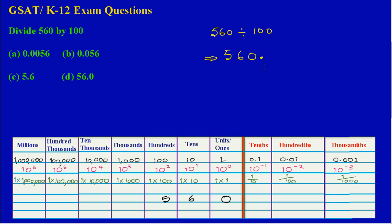When dividing by powers of 10 we move the point to the left — the point isn't really moving, but that's the general concept. Count how many zeros are in the number you're dividing by. In 100 there are two zeros, so I'm going to hop two times to the left: one, two. The point has now moved two places to the left.